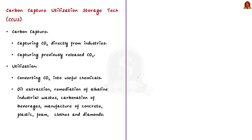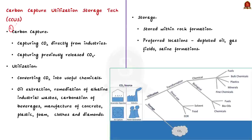CCUS has three components to it. The first is carbon capture. Carbon capture involves capturing carbon dioxide emissions directly from industrial operations before it has a chance to enter the atmosphere — capturing the CO₂ before it enters the atmosphere. Carbon capture also involves capturing the already existing carbon dioxide present in the atmosphere.